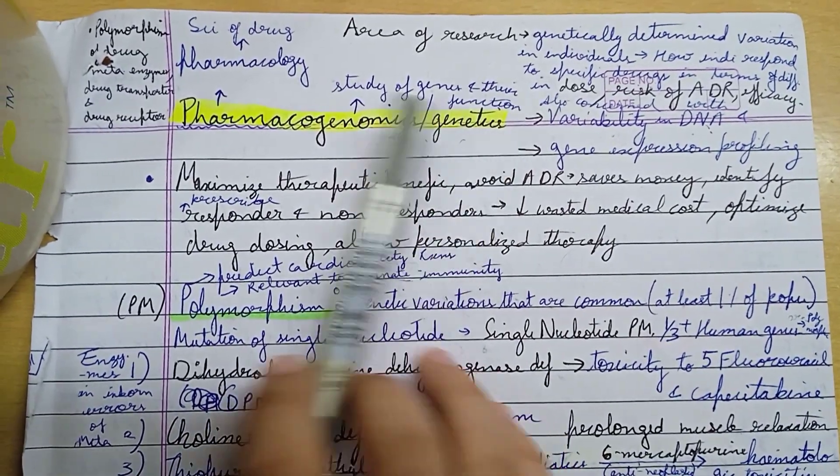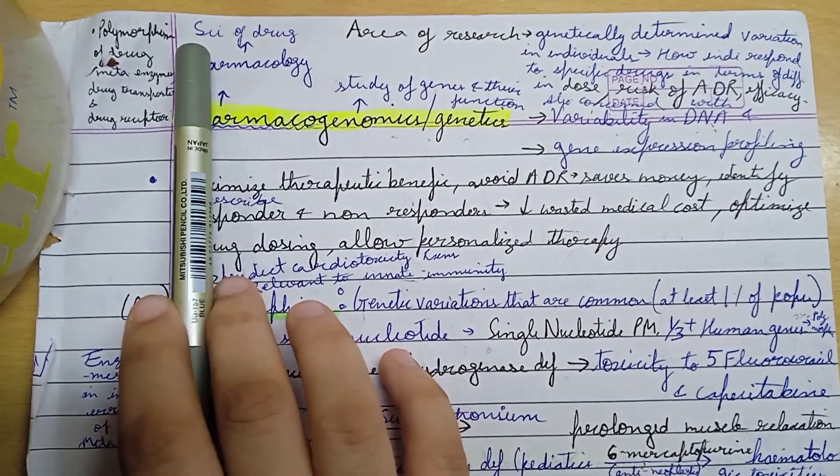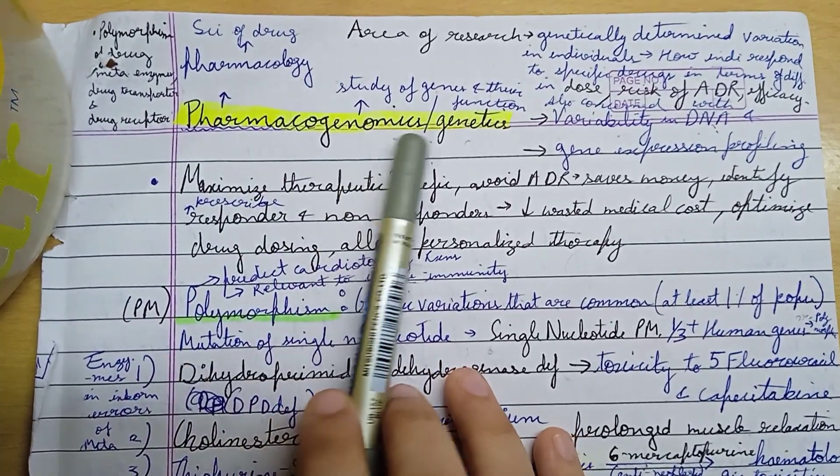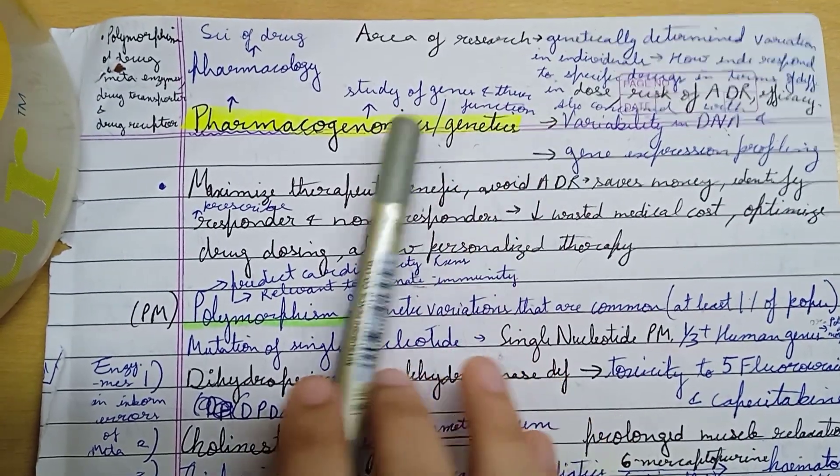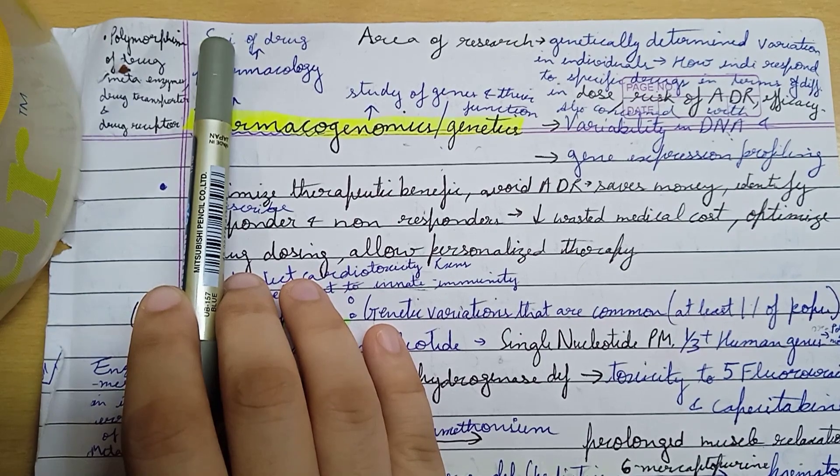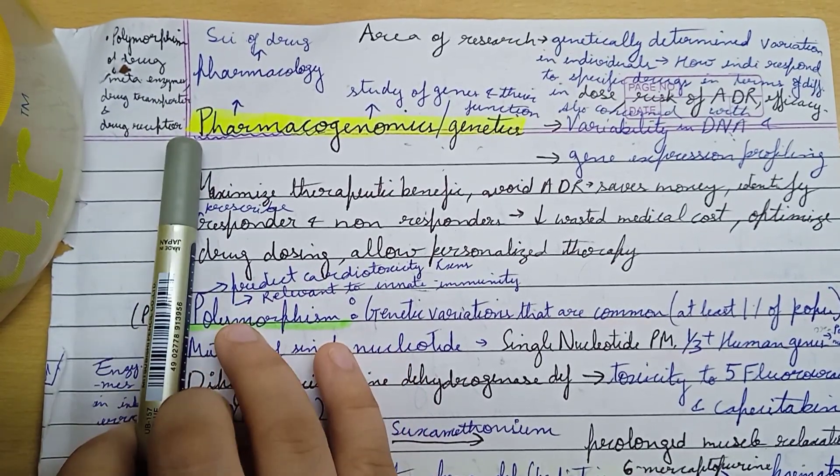Pharmacogenomics and pharmacogenetics are derived from two words: pharmacology, the science of drugs, and genomics, the study of genes and their function. We will discuss polymorphism of drug metabolizing enzymes, drug transporters, and drug receptors.